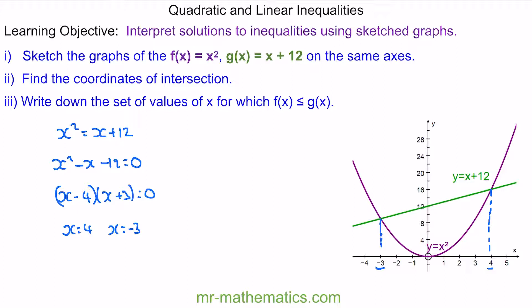So for part 3, we can find the set of values for x where f(x) is less than or equal to g(x). This is along the parabola, but under the green line. We can see at this point that x is less than or equal to 4, but greater than or equal to negative 3. These are the set of values for this inequality.